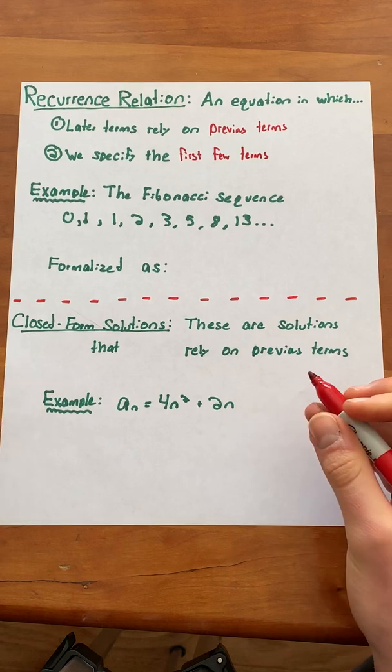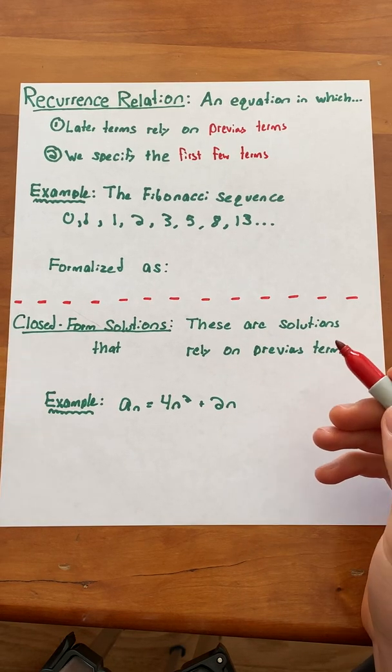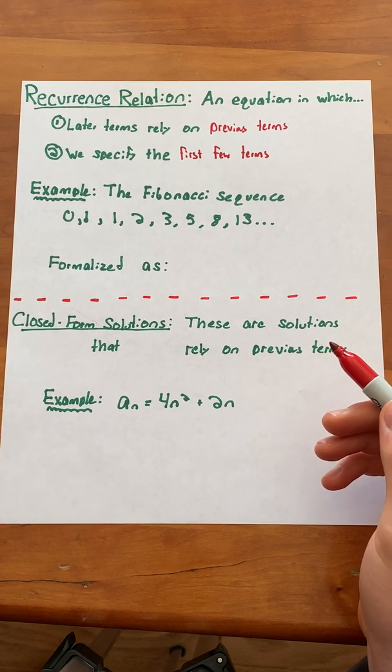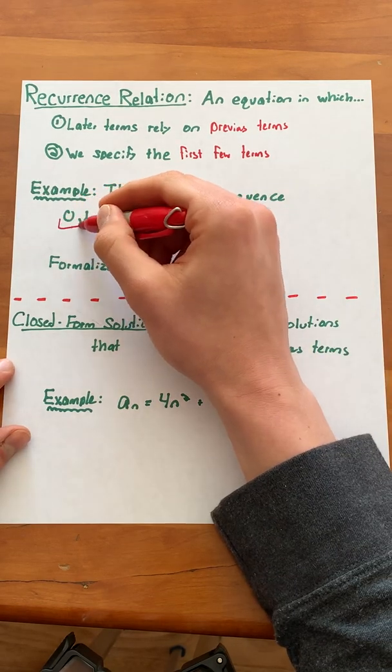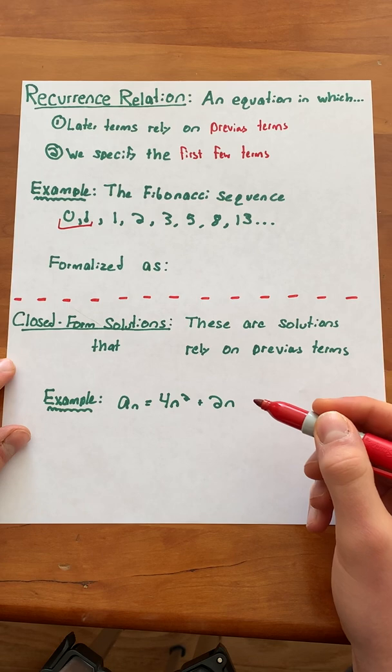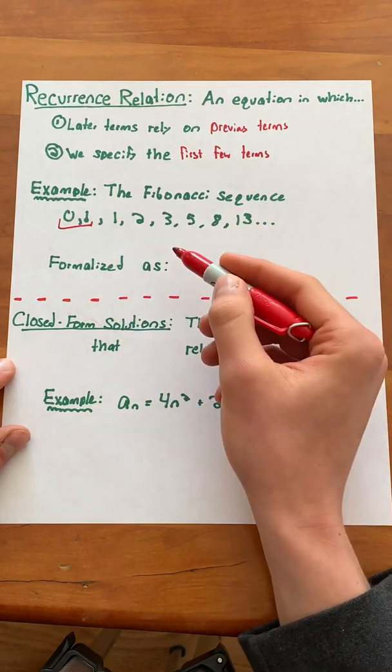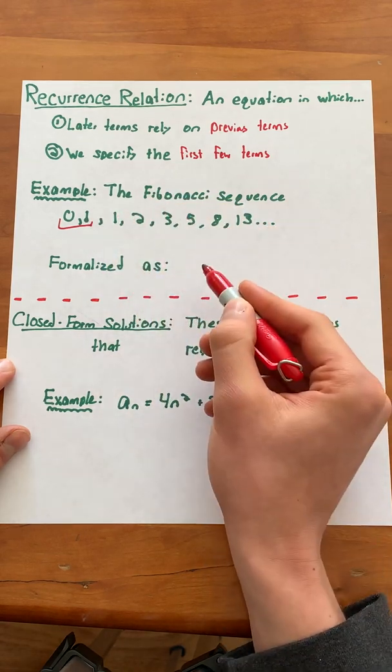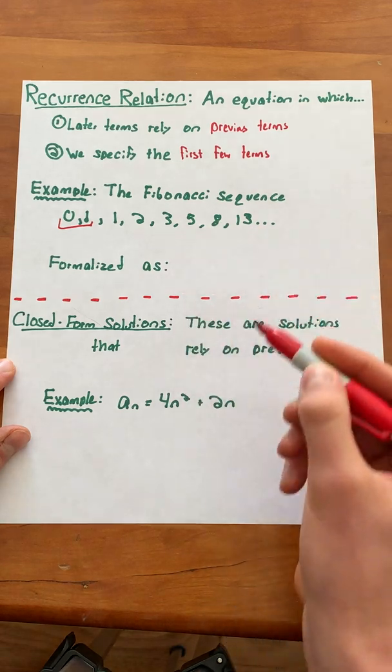An example of a recurrence relation that you've probably seen pretty commonly is the Fibonacci sequence. This is a recurrence relation in which a term is the sum of the two previous terms and we are given the first few terms 0 and 1. So the third term in the Fibonacci sequence is 0 plus 1 which is 1. The fourth term is 1 plus 1 which is 2. The fifth is 1 plus 2 which is 3 and so on and so forth.